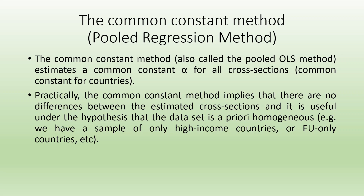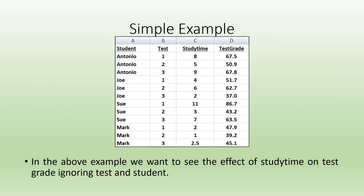So all high-income countries are European Union countries. We will take a very simple example to explain what the common constant method means. In this example, we have a student, a test, study time, and test grade. We want to see the effect of study time on the test grades which the students will get, but we completely ignore the student and which test we are talking about. When running this type of analysis, it is known as the common constant method.